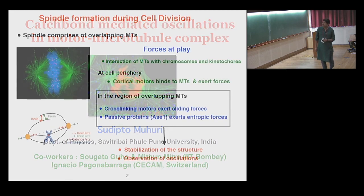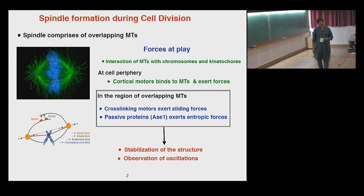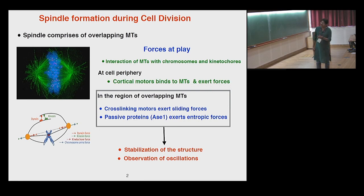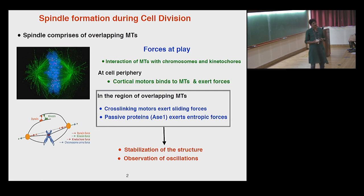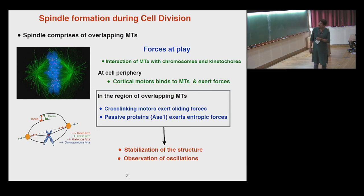Let us briefly begin with the process of spindle formation during cell division. This is one of the important events during cell division, wherein you have antiparallel microtubules. What you see here is a fluorescent-labeled image of these microtubules, and what you see in blue is the chromosome. During cell division in metaphase, these antiparallel microtubules interlock and form this spindle-like structure, which is typically stable for about 30 minutes. The stability of the structure arises out of the interplay of different forces at play.